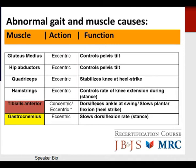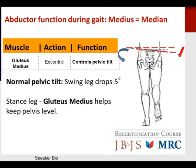The tibialis anterior and gastrocnemius represent the one area of the lower extremity in gait where there is a transition between concentric and eccentric activity, as previously described. The gluteus medius functions eccentrically to control pelvic tilt. Recall that normal pelvic tilt involves the swing leg dropping five degrees. On the stance leg, the gluteus medius helps keep the pelvis level.